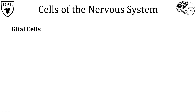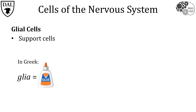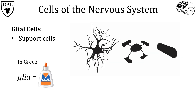Glia cells are the support cells of the nervous system. The word glia in Greek means glue, because it was originally thought that glia were responsible for binding the nervous system together. There are lots of different types of glia cells and they come in a variety of shapes and sizes.